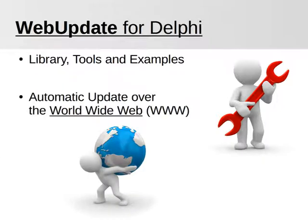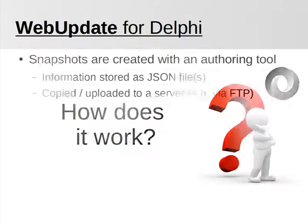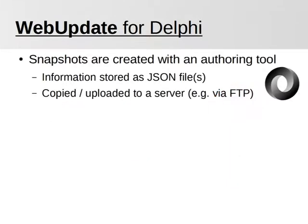It is meant to perform an automatic update over the internet. Using a supplied authoring tool, you create snapshots of your application at a given state. The snapshot information, like size and timestamps of the files, is stored in JSON files. These, along with application files, can easily be copied or uploaded to a server by using the FTP protocol.